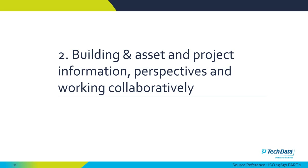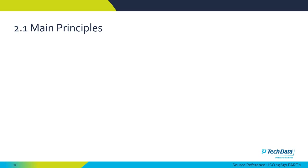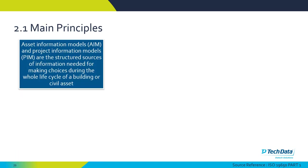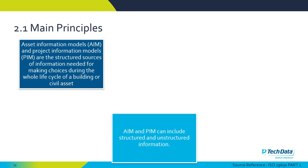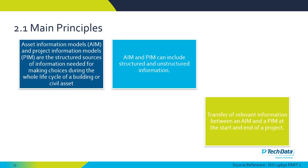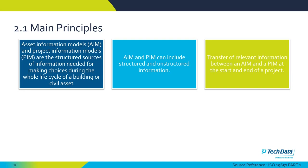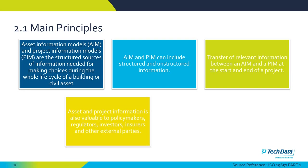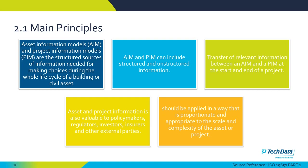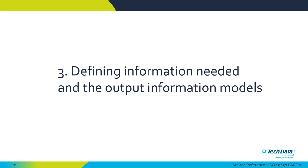Section 2 looks at building asset and project information and different perspectives when working collaboratively. Key principles include asset information models and project information models as structured sources of information needed to make choices during the whole life cycle of a building or civil engineering asset. The AIM and PIM can include structured and unstructured information, and the transfer of relevant information between them at the start and end of a project needs to be considered. Asset and project information is also valuable to policymakers, regulators, investors, property developers, insurers, and other external parties — applied proportionally to the scale and complexity of the project.